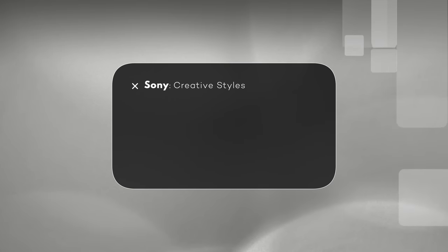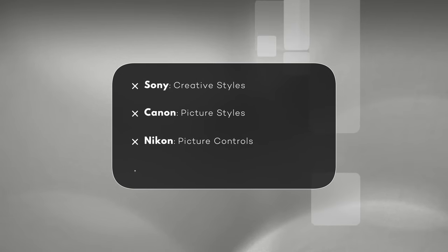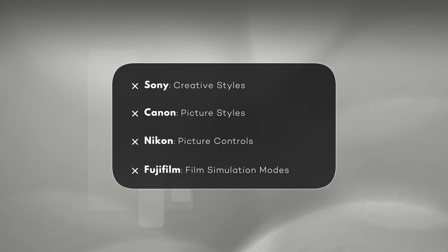Depending on the manufacturer of the camera that you're using, it might be called something else. Sony calls them creative styles. Canon calls them picture styles. Nikon calls them picture controls. And Fujifilm appropriately calls it film simulation modes. It got me thinking that this is probably one of the most underrated, probably underutilized features, in my opinion, of a camera.